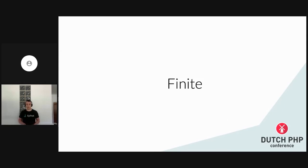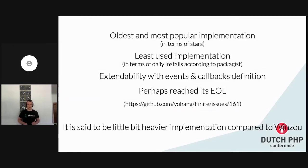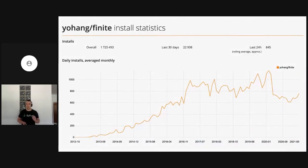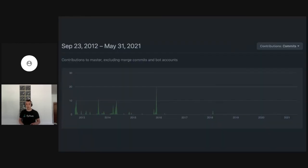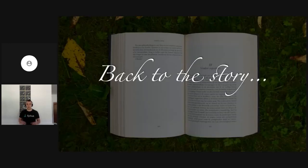There is a third library already on the market — the oldest and most popular in terms of stars. However, it is the least used in terms of daily installations. It has some extendability via events and callback definitions, similar to Winzu's state machine. But it has probably reached end of life — there is one issue requesting new maintainers. The development has been pretty dead for a few last years, with below 1,000 installations, making it the least used of the three. But with all this knowledge, let's move back to the story.